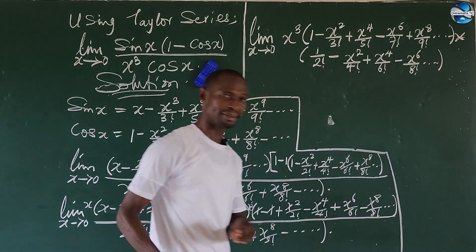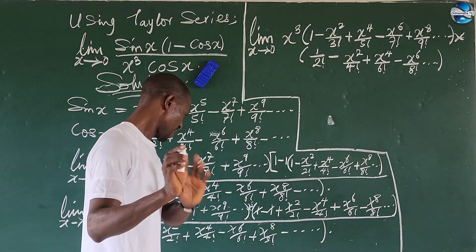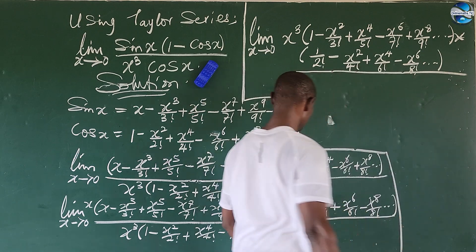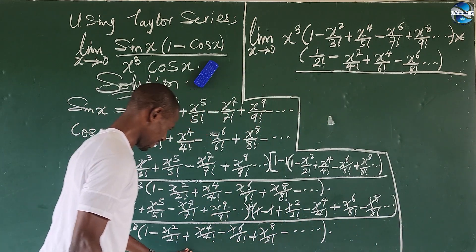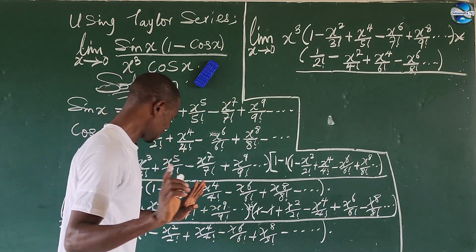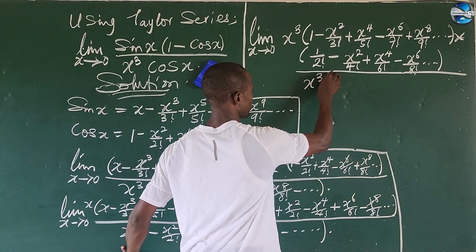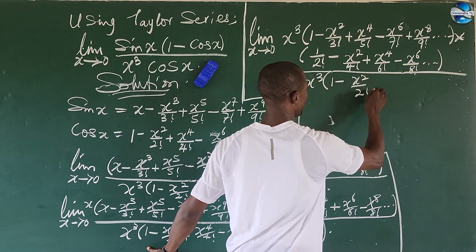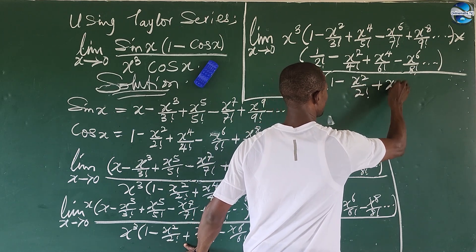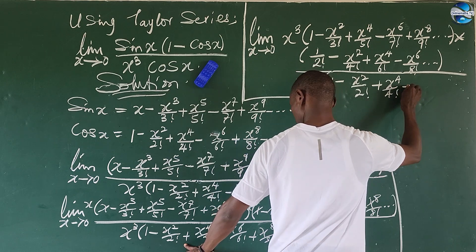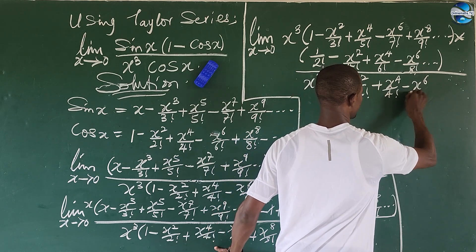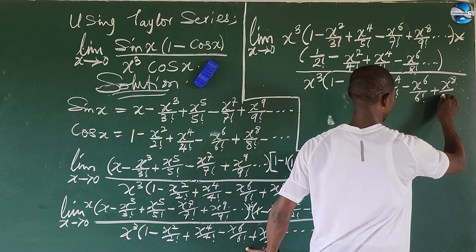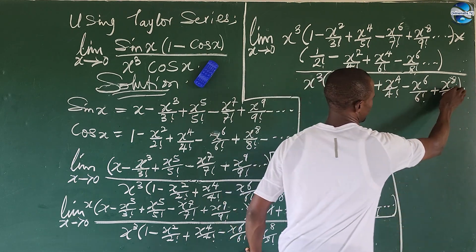All over the denominator: we are not factoring anything out here because everything remains the same, so we have x to the power of three times bracket one minus x to the power of two all over two factorial, plus x to the power of four all over four factorial, minus x to the power of six all over six factorial, plus x to the power of eight all over eight factorial, close bracket.